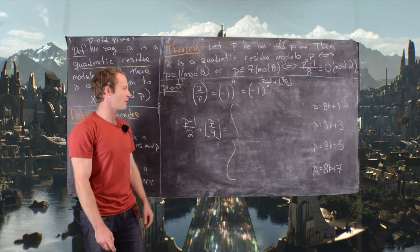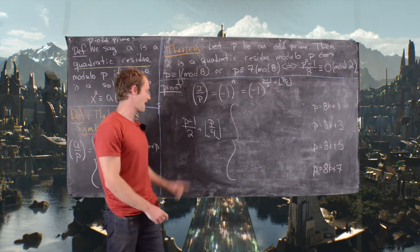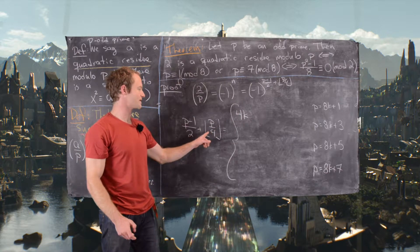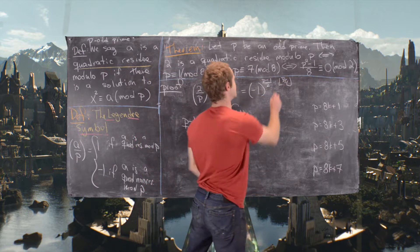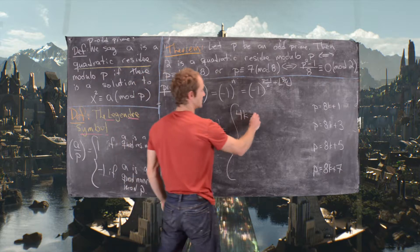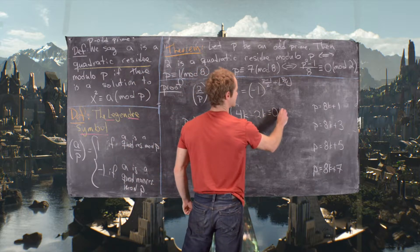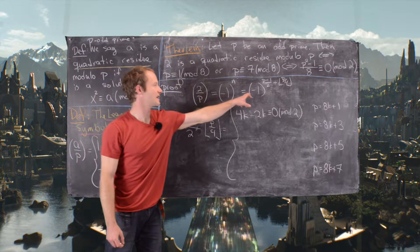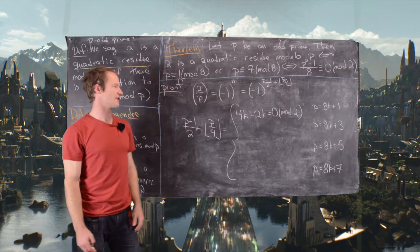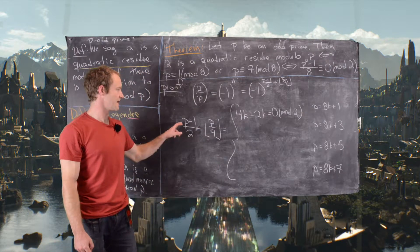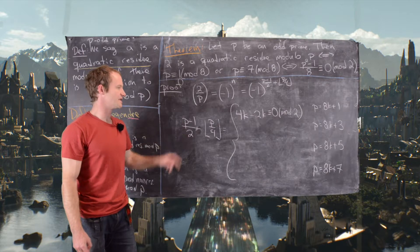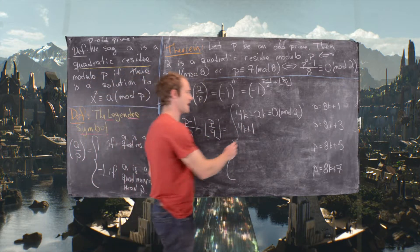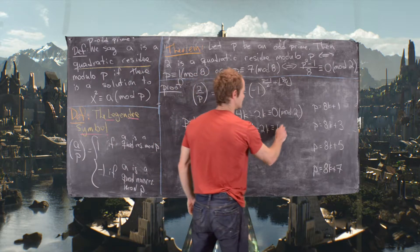If p = 8k+1, then (p−1)/2 = 4k, and ⌊(8k+1)/4⌋ = 2k, giving 4k − 2k = 2k ≡ 0 (mod 2). So the Legendre symbol is +1. For p = 8k+3, we get (p−1)/2 = 4k+1 and ⌊(8k+3)/4⌋ = 2k, giving 4k+1 − 2k = 2k+1 ≡ 1 (mod 2), so the symbol is −1.